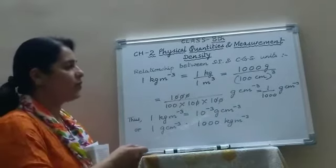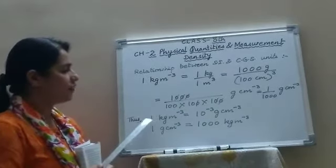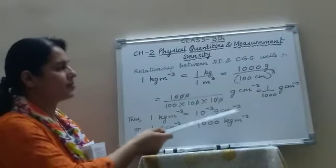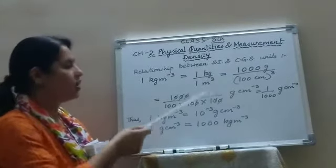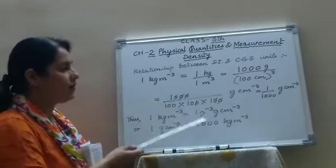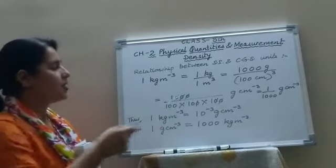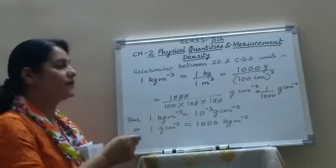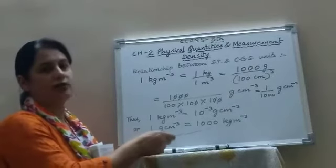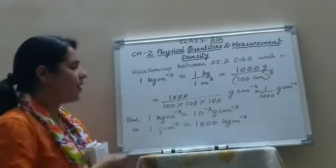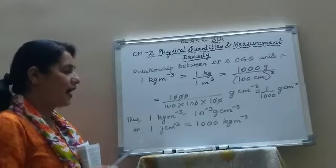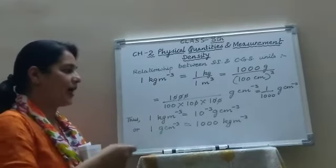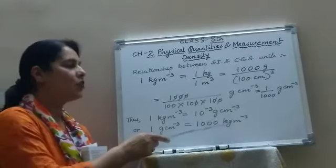Children, this is a very important relationship. If you have to convert kilogram per cubic meter to gram per cubic centimeter, you will multiply by 10 to the power minus 3. Similarly, 1 gram per cubic centimeter equals 1000 kilogram per cubic meter, and if you have to convert gram per cubic centimeter to kilogram per cubic meter, you will multiply by 1000.